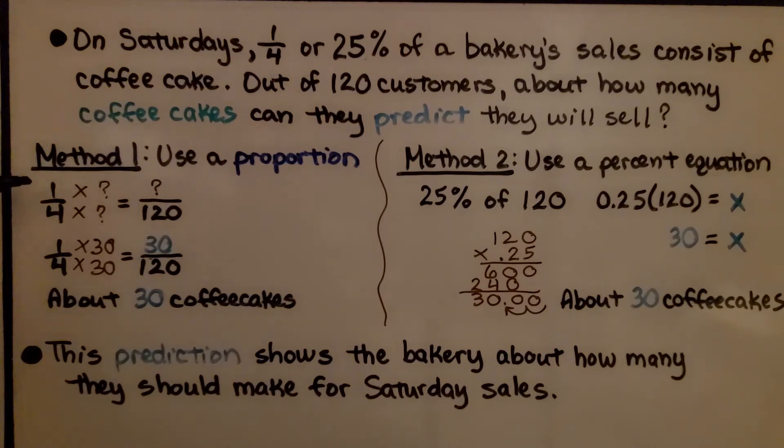We're going to do 1/4 and multiply it by a number for the numerator and denominator, that same number, so that the denominator is 120 and the numerator is in proportion. We know 4 times 30 is equal to 120. That means we need to multiply the numerator by 30. We get 30/120. That means about 30 coffee cakes to cover Saturday's sales.